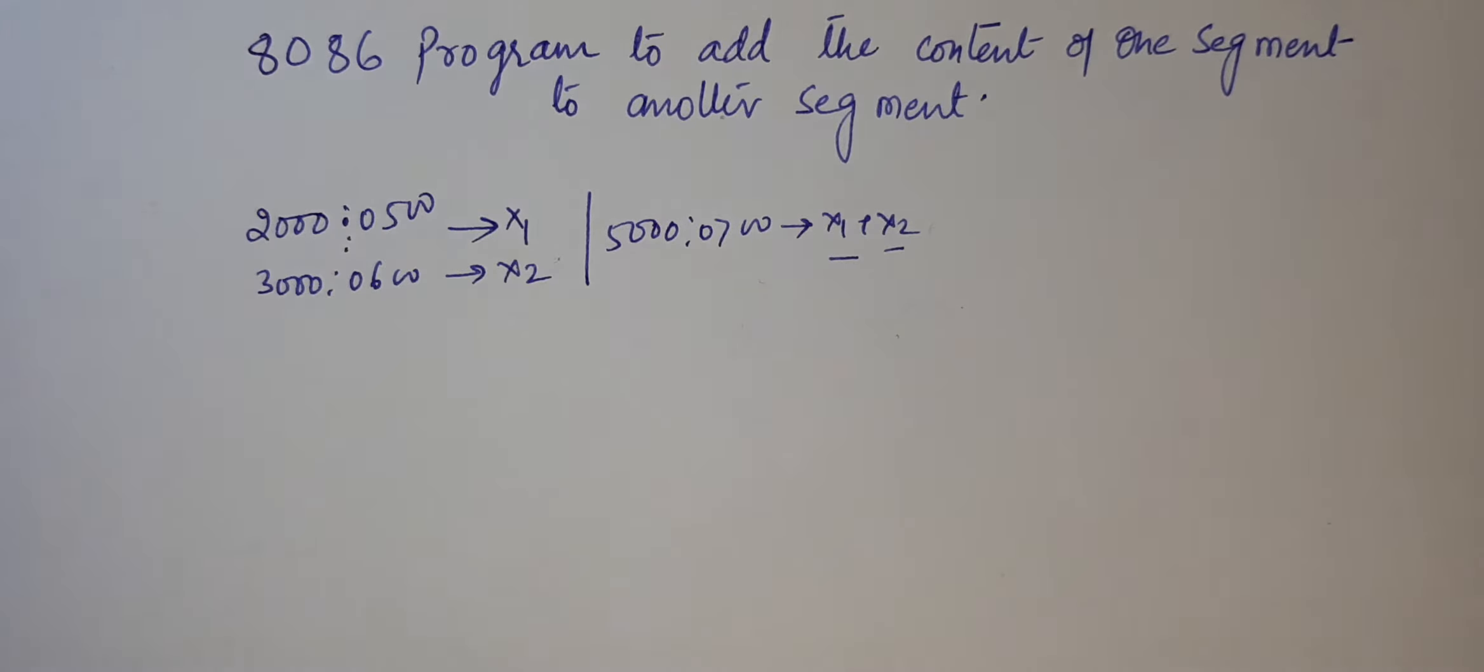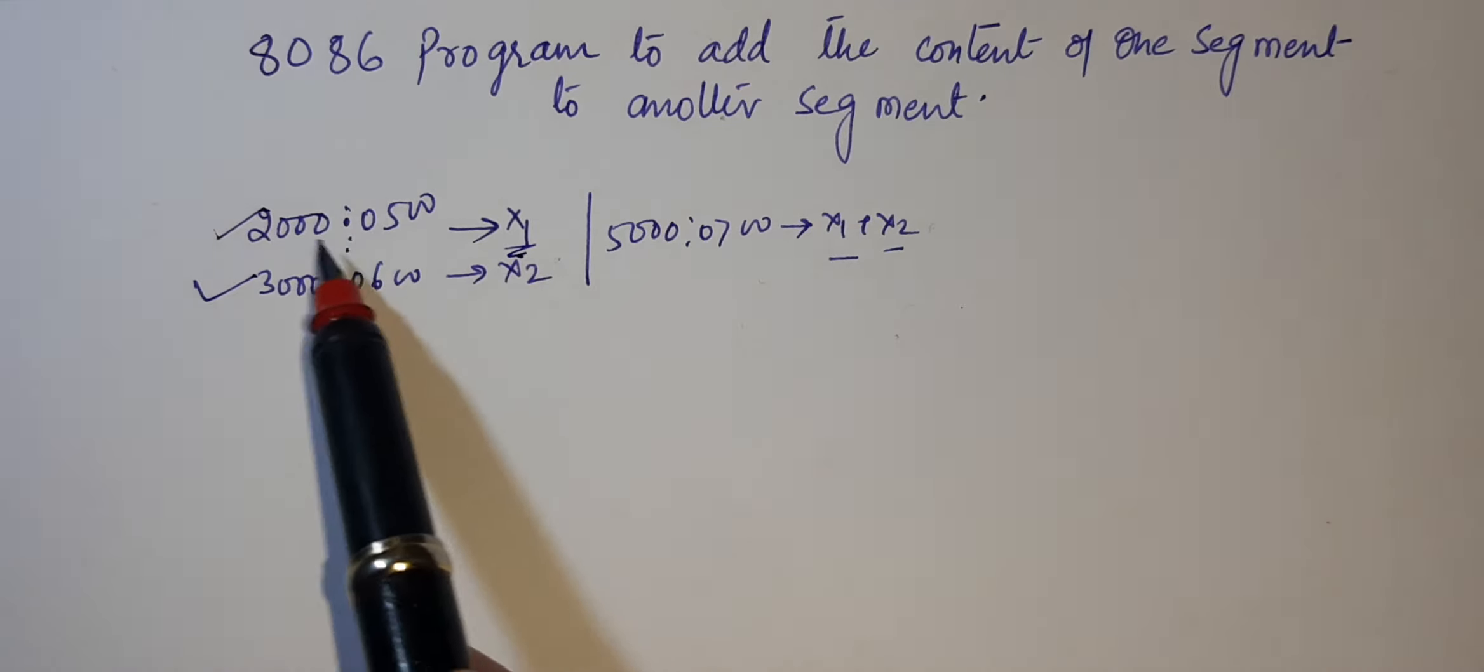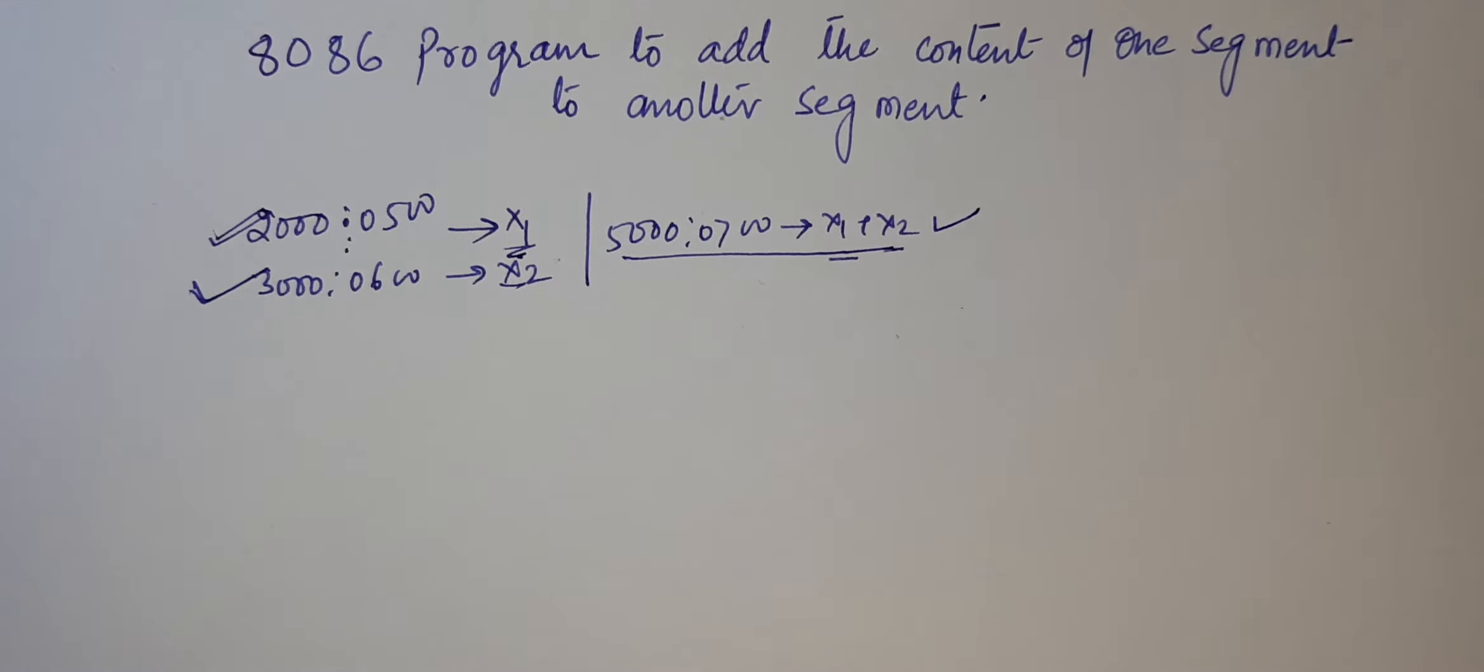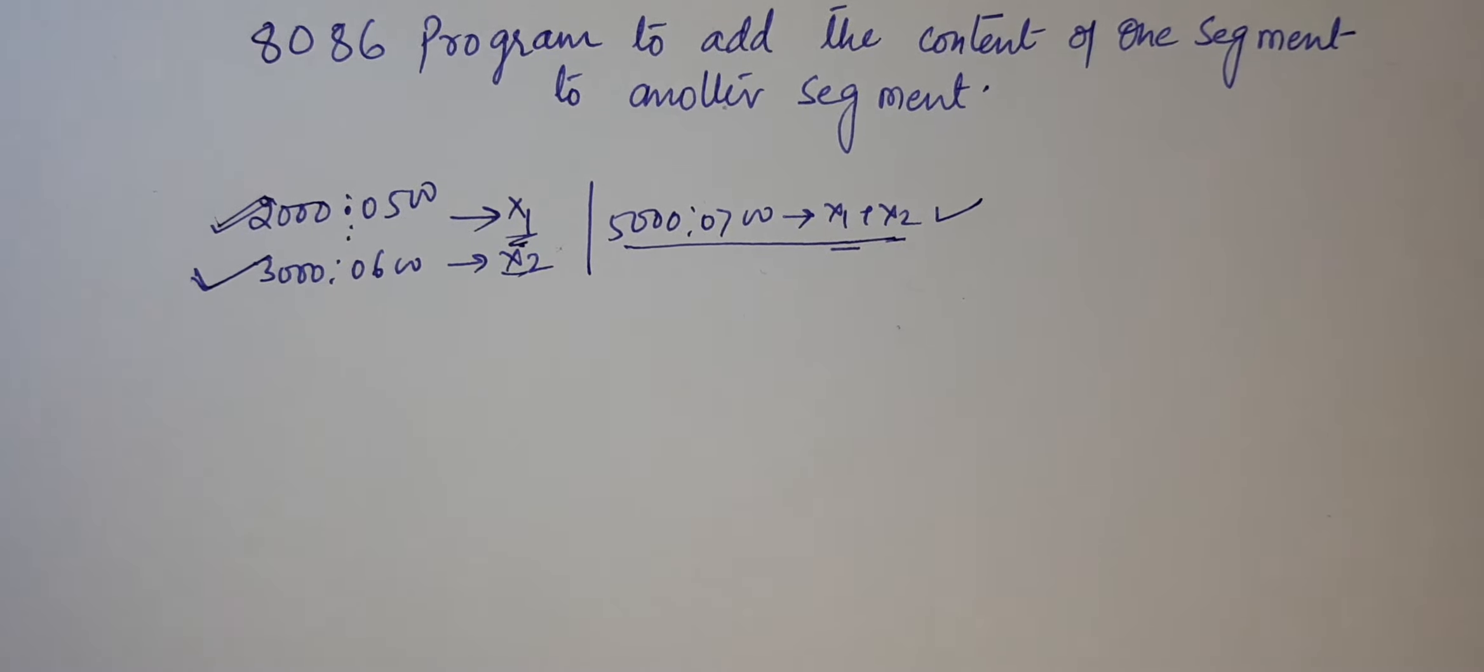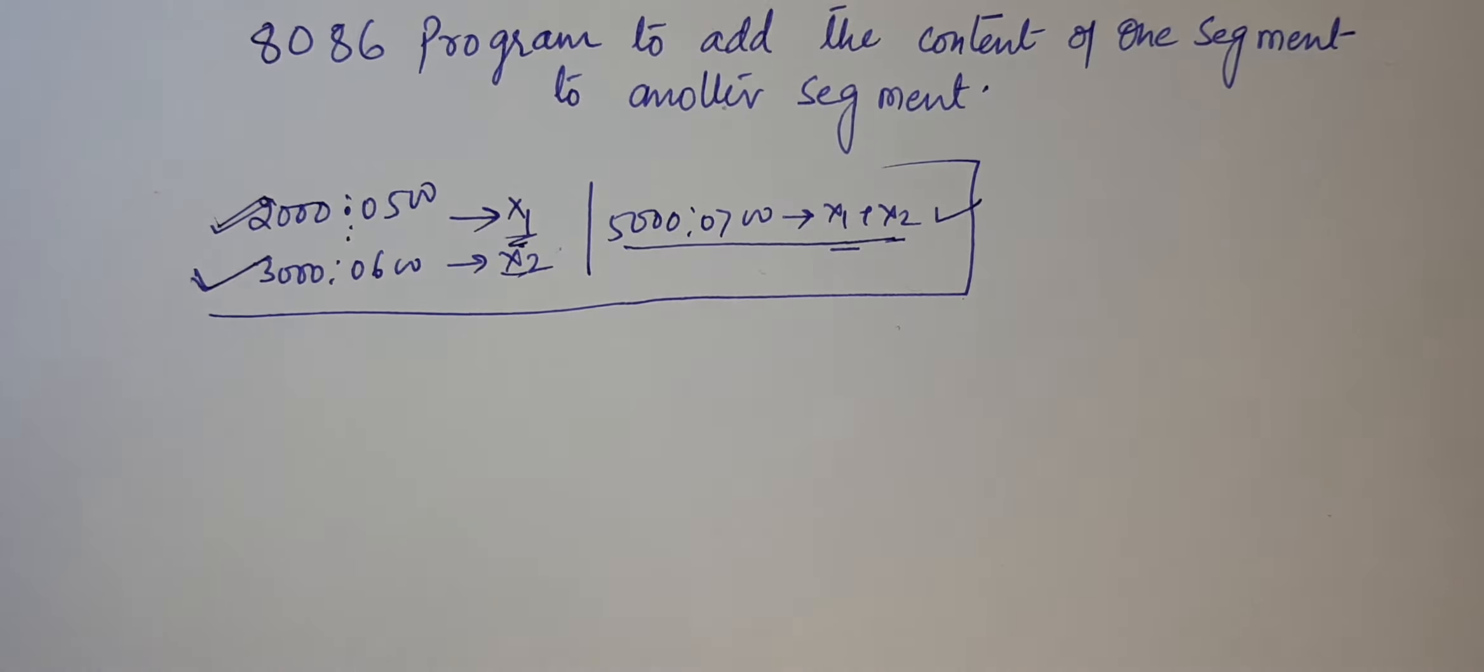Basically, the program is that we have two segments, and we have to add them and store output at a third segment. Here you can see I have taken two segments: first one this, second one this. X1 is stored at first segment, X2 at second segment, and we have to store the output here. This program is very easy. I will explain the confusion so that you can easily understand.